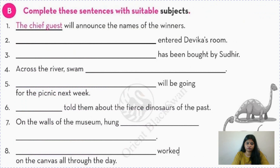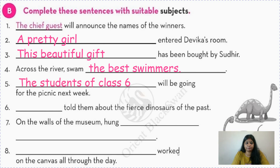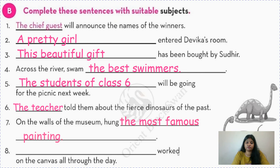Now complete these sentences with suitable subjects — the predicate is already given and you only have to fill the subject. I am writing my own answers; you can write your own, don't just copy. For example, 'who entered Davika's room' — I write 'a pretty girl,' but you can write any friend or 'I entered Davika's room.' 'This beautiful gift has been bought by Sudhir.' 'The best swimmers swam across the river.' 'The students of class 6 will be going for the picnic next week' — or you can write 'my parents' or 'my teachers will be going.'